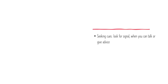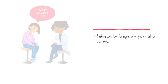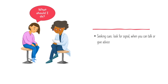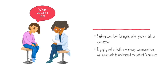Next one is Seeking Cues. As we discussed, don't jump to assumptions — be patient. We need to seek cues or look for signals for when we can talk or give advice. The patient will remain quiet for a few minutes, or she will ask us directly or indirectly what to do. She will give a sign and we have to take that opportunity. Seeking cues makes sure that the patient is now comfortable hearing from us and has finished explaining most of her part. Last one is Engaging Self or Both. In order to know the patient's problem clearly, we have to engage ourselves and the patient both in the discussion. There should be a connection between the two; otherwise, if it's one-way communication, the purpose of knowing the patient's problem will never be fulfilled.